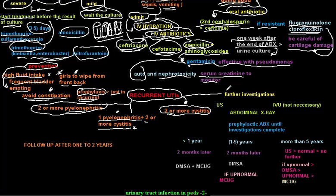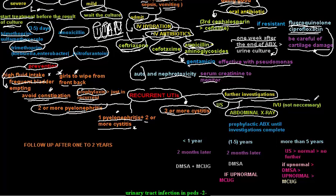In cases of recurrent UTI, or atypical UTI as discussed in the previous video, we have to do further investigation. Investigations include abdominal ultrasound and abdominal X-ray. IVU is not that necessary. During the investigation period, we give prophylactic antibiotics such as nitrofurantoin until the investigation is complete.